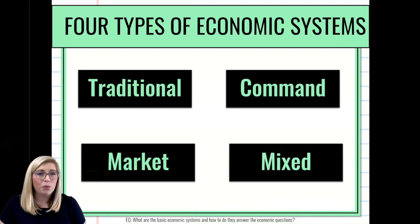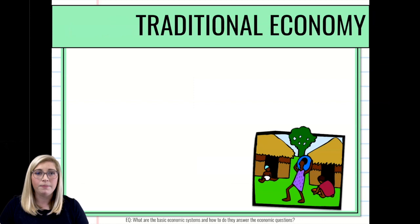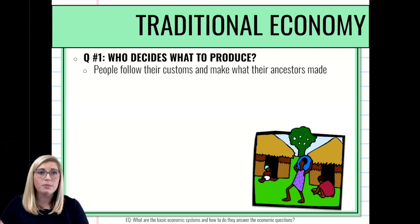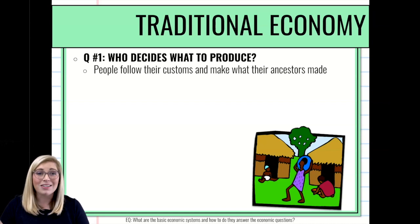Three of these four really aren't used anymore — only one is basically predominant — but there are traces of them found around the world. Our first is the traditional economy. When we talk about what are we going to make, in a traditional economy people follow customs and traditions to make whatever their ancestors made. This is the mentality of if it's not broke, don't fix it — you just keep doing what happened before you.